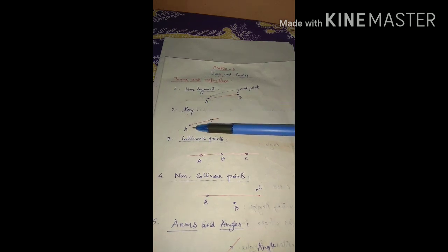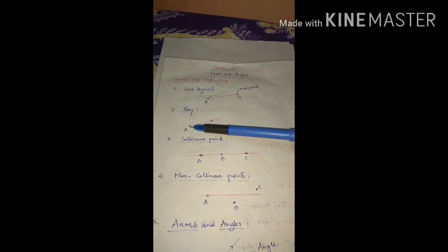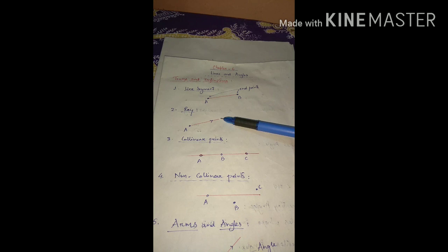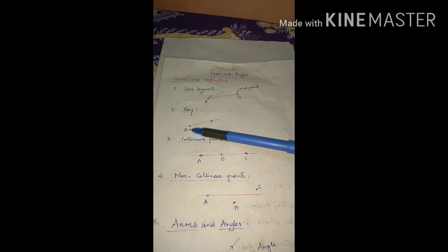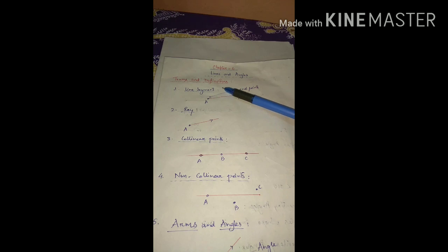The next one is ray. In the case of a ray, we also consider a line, but here only one end point is there. From that point a line extends in one direction, but there is no end point on the other side. So if only one end point is there, it is known as a ray. I think you covered these two in class eight.